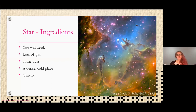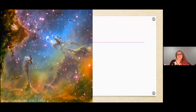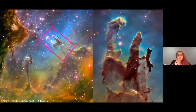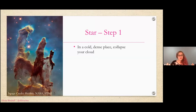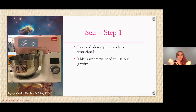So now we've measured out our ingredients, we've got them out of the pantry, and we're heading into the kitchen to get cooking. The first thing you need to do is collapse your cloud of dust and gas in that cold dense place — this is where you use your gravity. Gravity draws everything in so the core gathers together all the dust and gas, just starting to come together. That takes around 10,000 years.